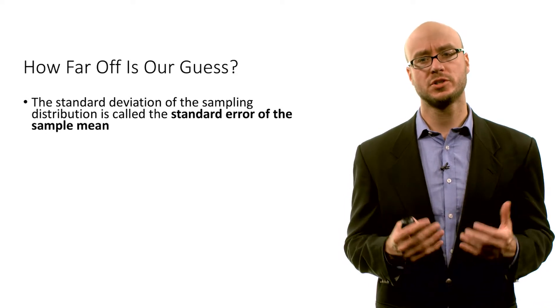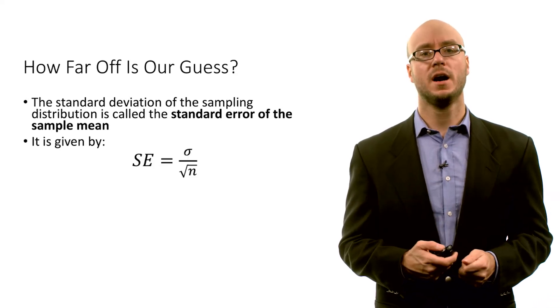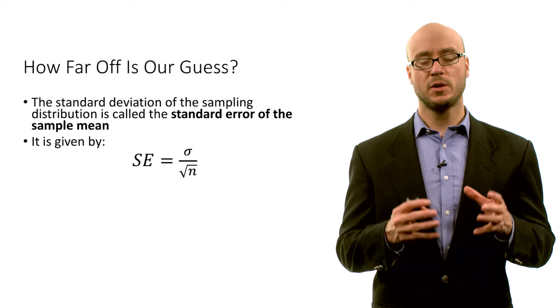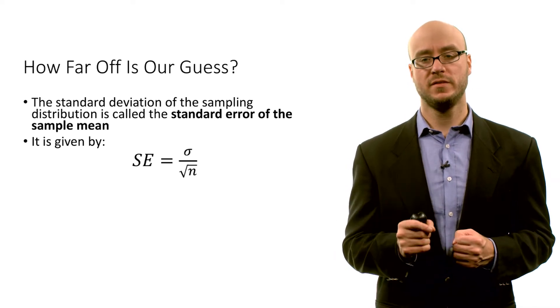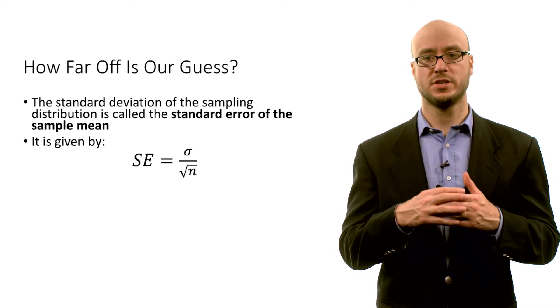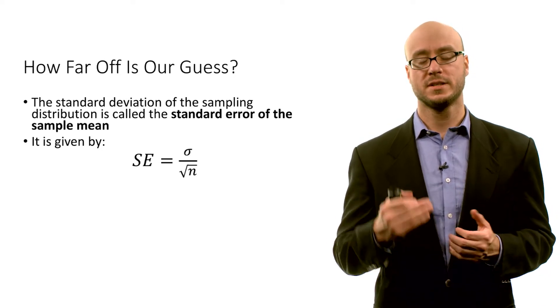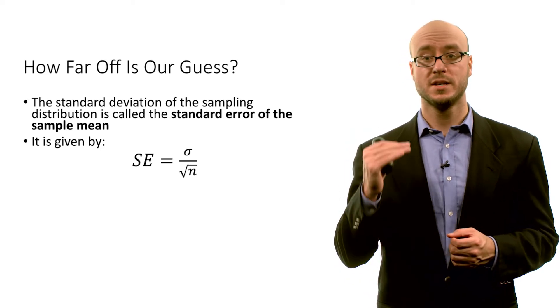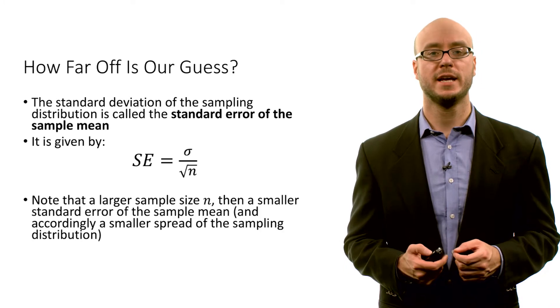We know that the sample mean x-bar is our single best guess, without additional information, of this unobserved population mean mu. But we might ask: how far off is our guess? How far off do we expect our point estimate to be? Well, the standard deviation of the sampling distribution — we call this the standard error of the sample mean, sometimes called SE for short — it equals the population standard deviation sigma divided by the square root of the sample size n.